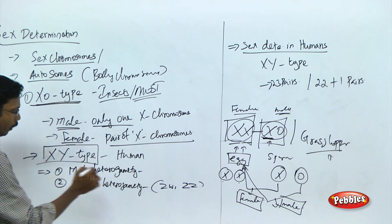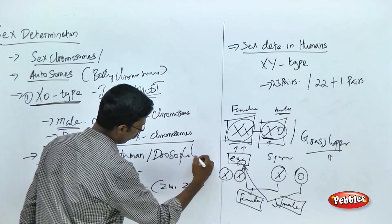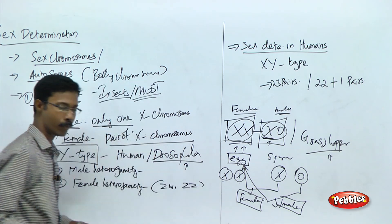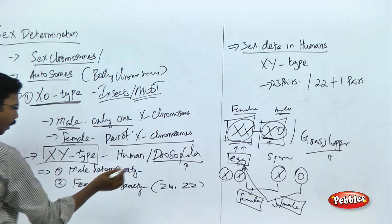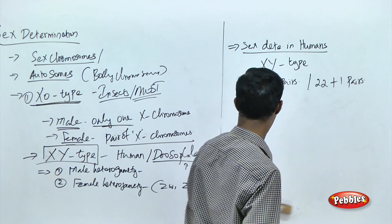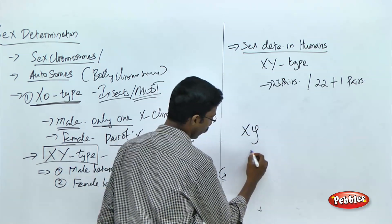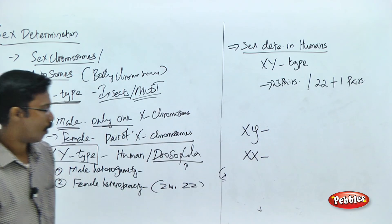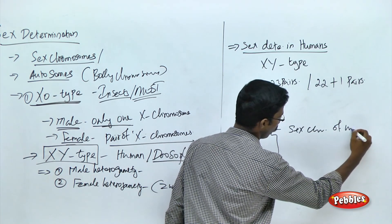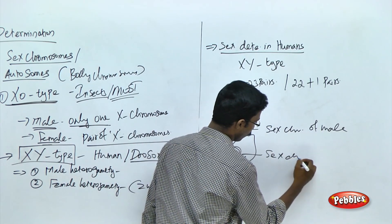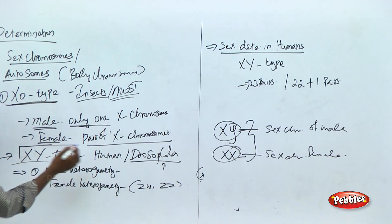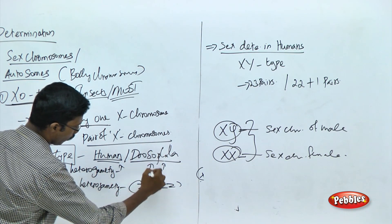The next type is the XY type, which we see in both human beings and Drosophila — Thomas Hunt Morgan's fruit fly. In this type, males carry XY chromosomes and females carry XX chromosomes. These are the sex chromosomes of male and female respectively. This genotype can be observed in human beings and in Drosophila.